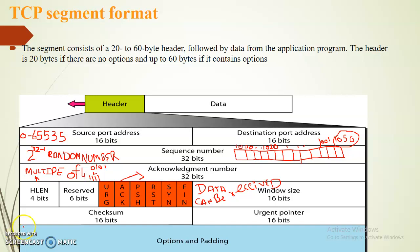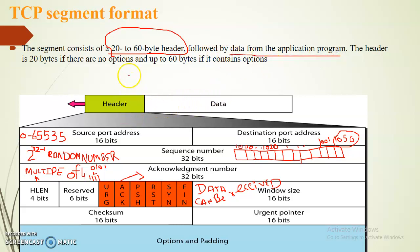Hello students. In this lecture we are going to study the TCP segment format. In TCP segment format, the maximum size of the header is 20 to 60 bytes, followed by data from the application program. The minimum header size must be 20 bytes. Now we will go through one by one all the fields of the TCP header.